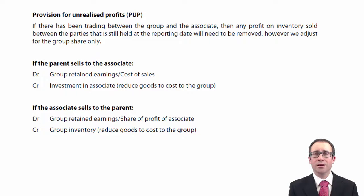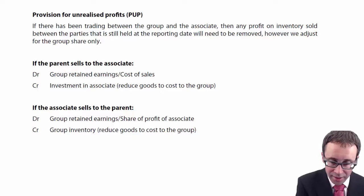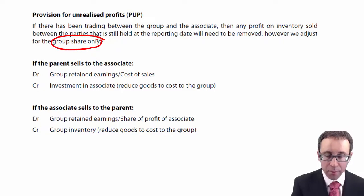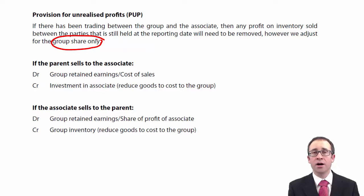The key thing to remember is that the idea is still exactly the same as what you saw previously when there was a PUP adjustment between the parent and the sub or the sub and the parent. What you need to do is remove any profit that has been made on goods that have been sold whereby the goods are still in inventory at the end of the year. However, the big difference here is that when we work out the PUP based upon the markup or the margin and the amount of inventory held at the end of the year, we need to make sure that we adjust for the group share only.